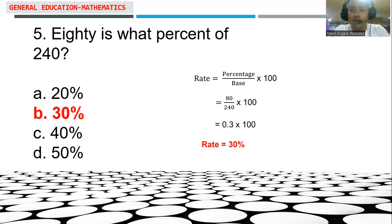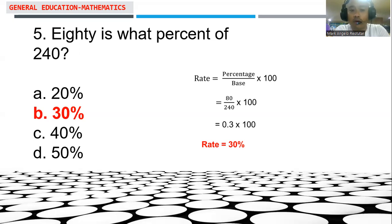Manipulating our original formula — percentage equals rate multiplied by base — we divide both sides by the value of the base, so the formula becomes: rate equals percentage over base. Since we are looking for the percent value, we multiply by 100. So rate equals 80 over 240 multiplied by 100, giving a rate of 30%. So 80 is 30% of 240.